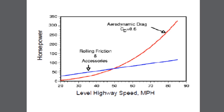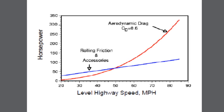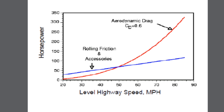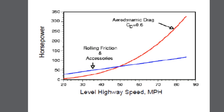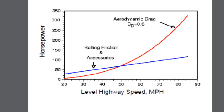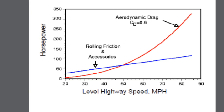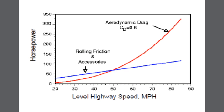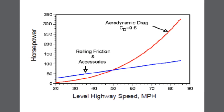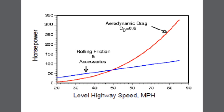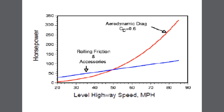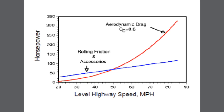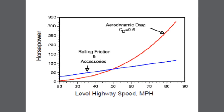All these components sum up to create the total aerodynamic drag, and aerodynamic drag increases with the square of the velocity of the vehicle. Other resistances such as rolling resistance don't have as much influence with speed, but aerodynamic drag does.